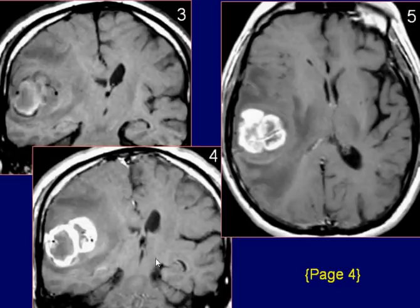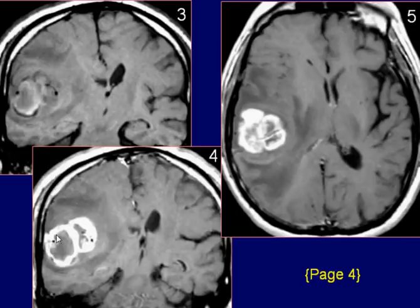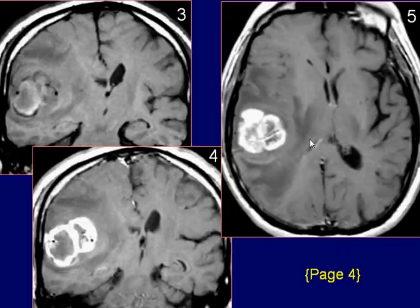Coronal and axial post-gadolinium T1-weighted images reveal intense peripheral enhancement of the lesion. A central non-enhancing area is seen, likely due to necrosis. There is no abnormal enhancement in the thalamus, representing more vasogenic edema.